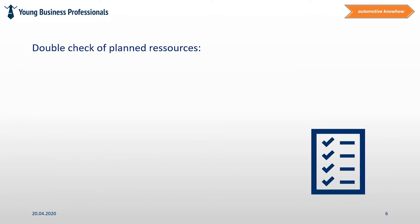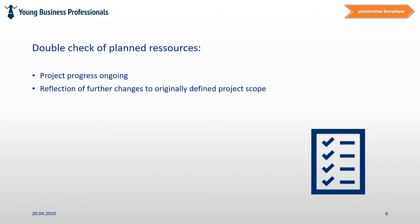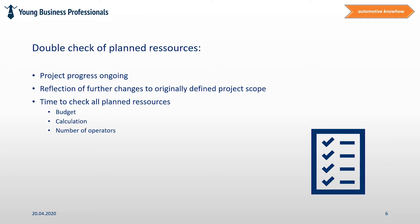Double check of planned resources. Before kicking off procurement of the planned equipment, it makes sense to double check the originally planned resources. The project has moved forward and eventually things may have developed in a different direction than originally planned. Often additional or changed requirements cause design changes that potentially impact the process and its cycle times as well. This may also result in changes to costs, layouts, and capacity. Due to that, it makes sense to check the following: the status of the budget, the status of the calculation, the number of operators required for the assembly process, required space in the production plant, and also the achievability of production capacities which were promised in the quotation to the customer originally.